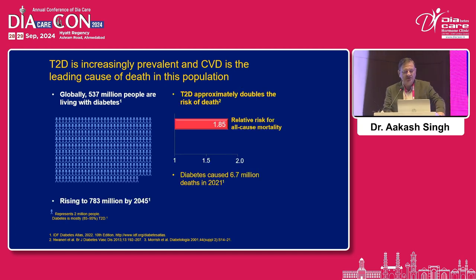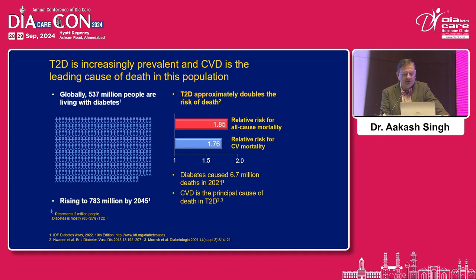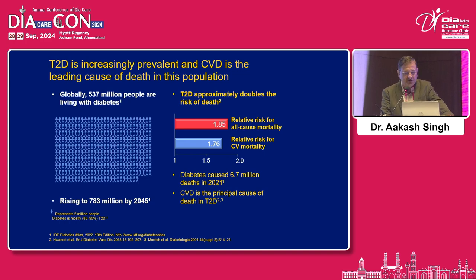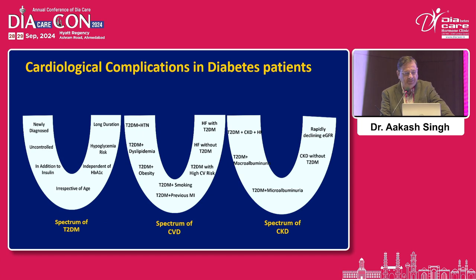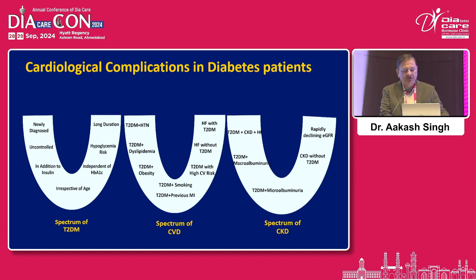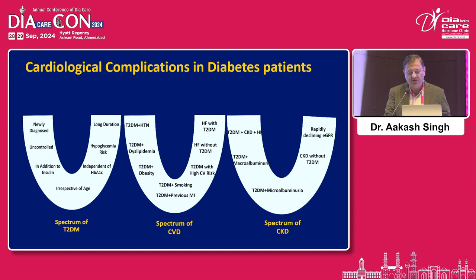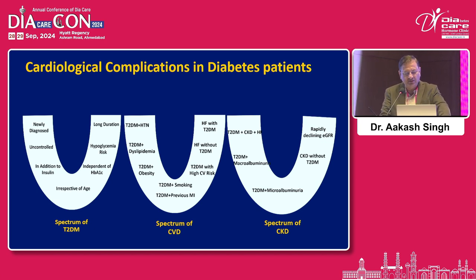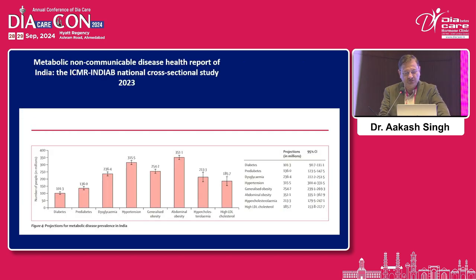As you know, diabetes is increasingly prevalent and CVD is a leading cause of death in this population, with approximately 1.76 times relative risk of CVD mortality in patients with diabetes. There are a lot of deaths in diabetes due to CVD. If you see the spectrum of diabetes, there are CVD complications and CKD complications associated, and all of these cardiorenal complications increase the CVD risk to a large extent.